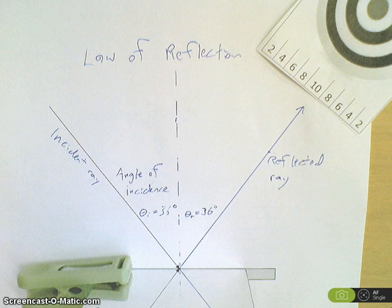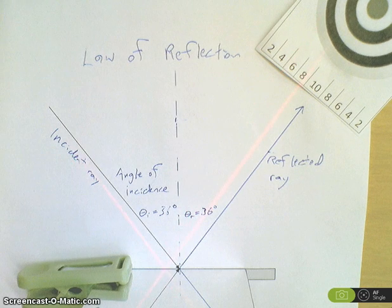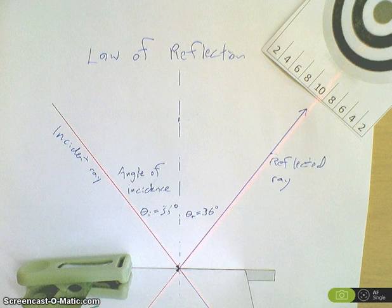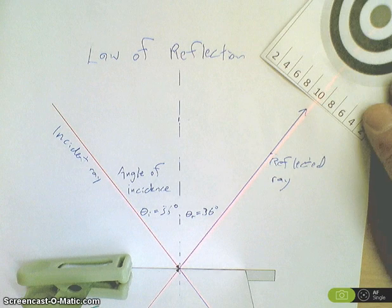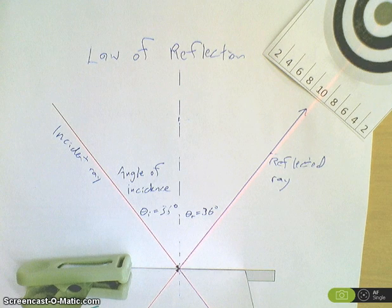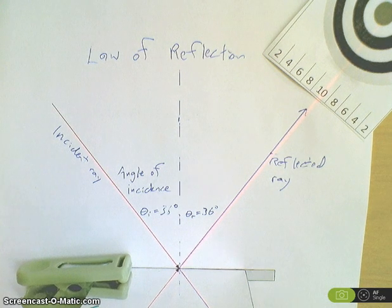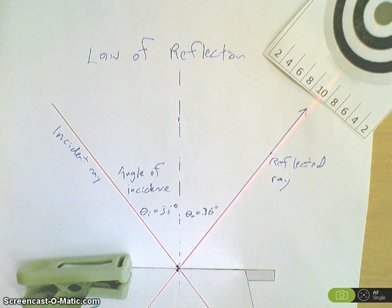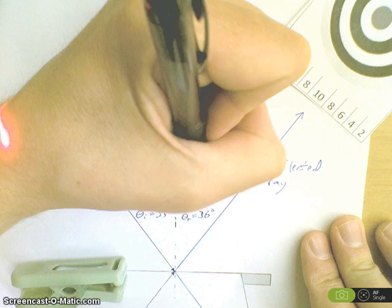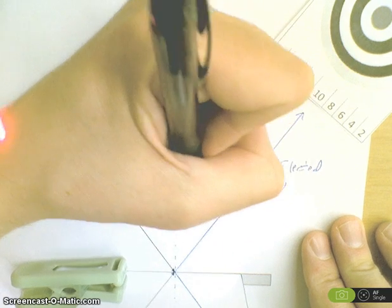Let's see how the reflected ray does. I line it up with the incident. Look at that. Almost perfect. Not quite. But, that's the process that you go through in order to determine the reflected or the angle of reflection.